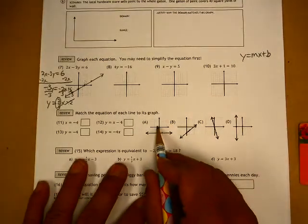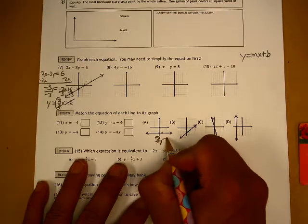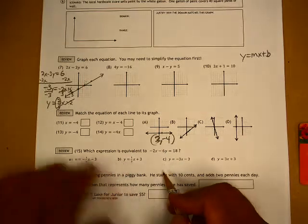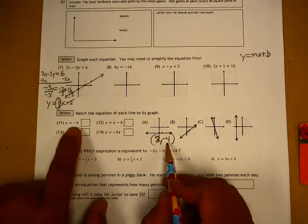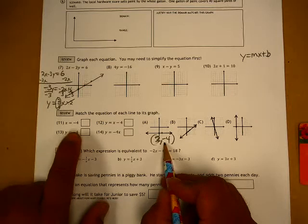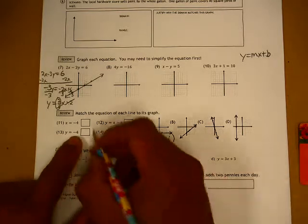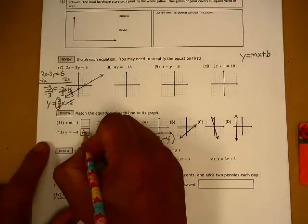That point is at positive 2, negative 4. Well, which one does that match? Does that match the x being negative 4 or does that match the y being negative 4? It matches the y being negative 4. So this one is the y value of negative 4.